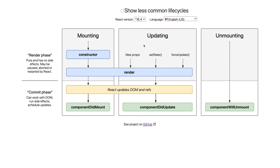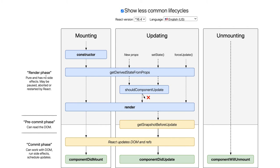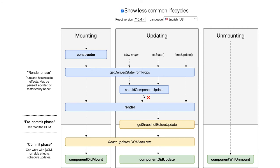If you look at the less common lifecycle methods, they include getDerivedStateFromProps, shouldComponentUpdate, and getSnapshotBeforeUpdate. In the render phase, these are pure methods with no side effects — they may be paused, aborted, or restarted by React. In the commit phase, you can work with the DOM, run side effects, and schedule updates — that's where componentDidMount and componentDidUpdate live.